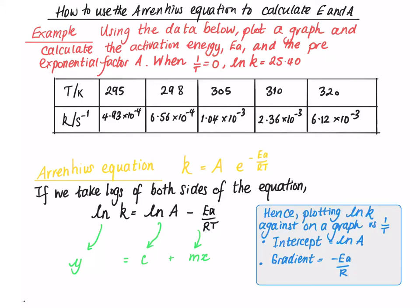So if we plot this on a graph, ln K against 1 over T, the intercept is ln A, and the gradient is minus Ea, the activation energy, divided by R.